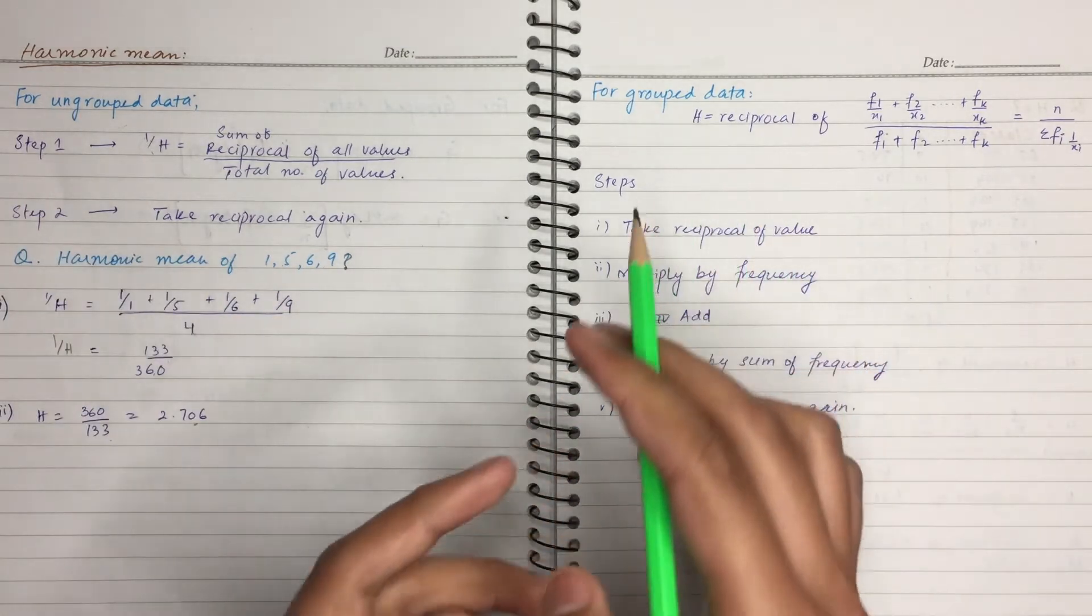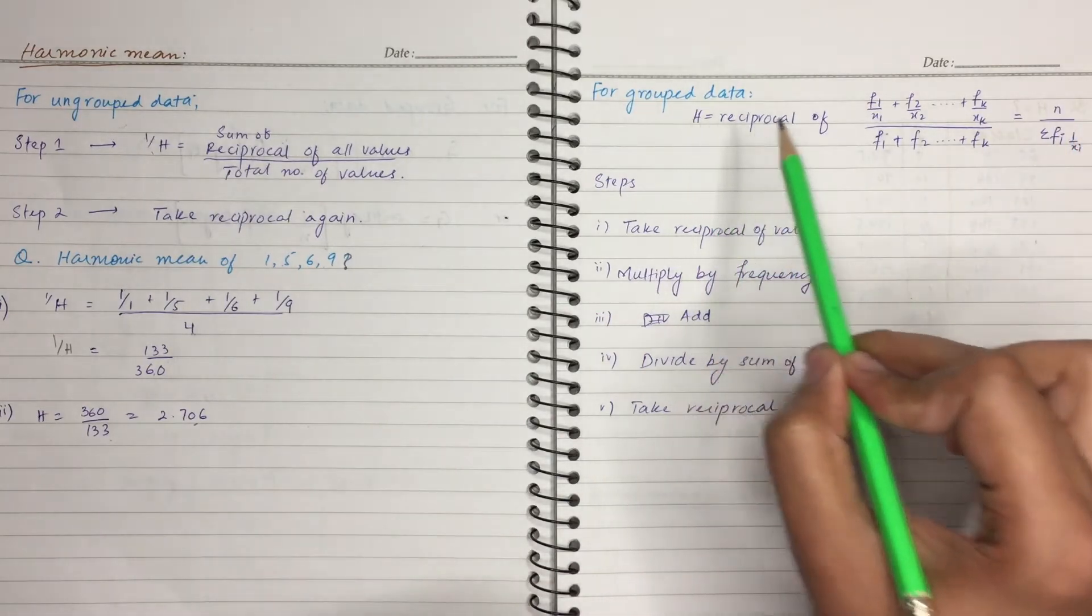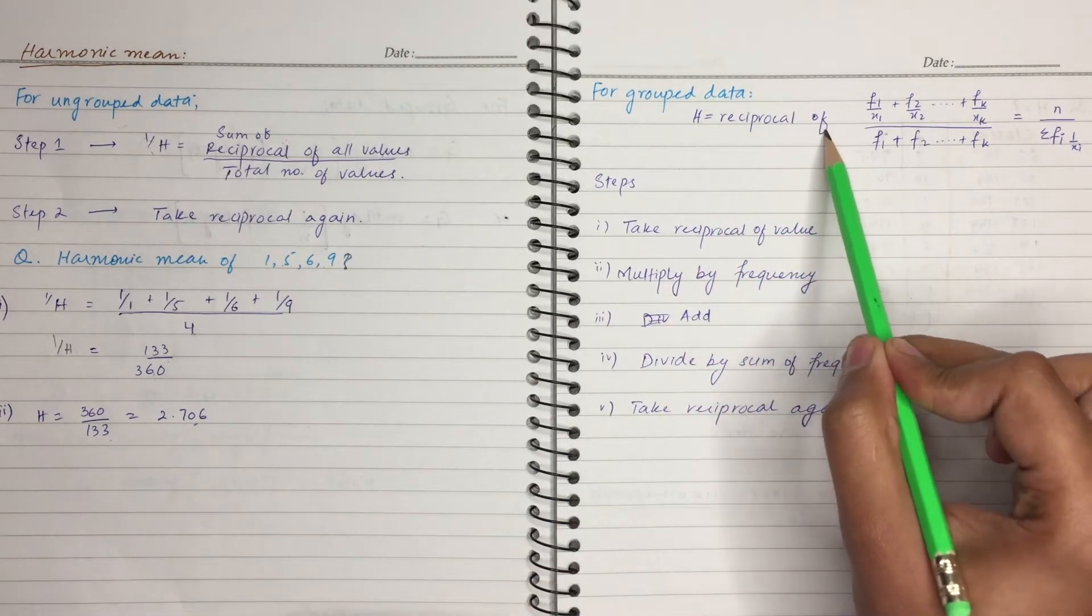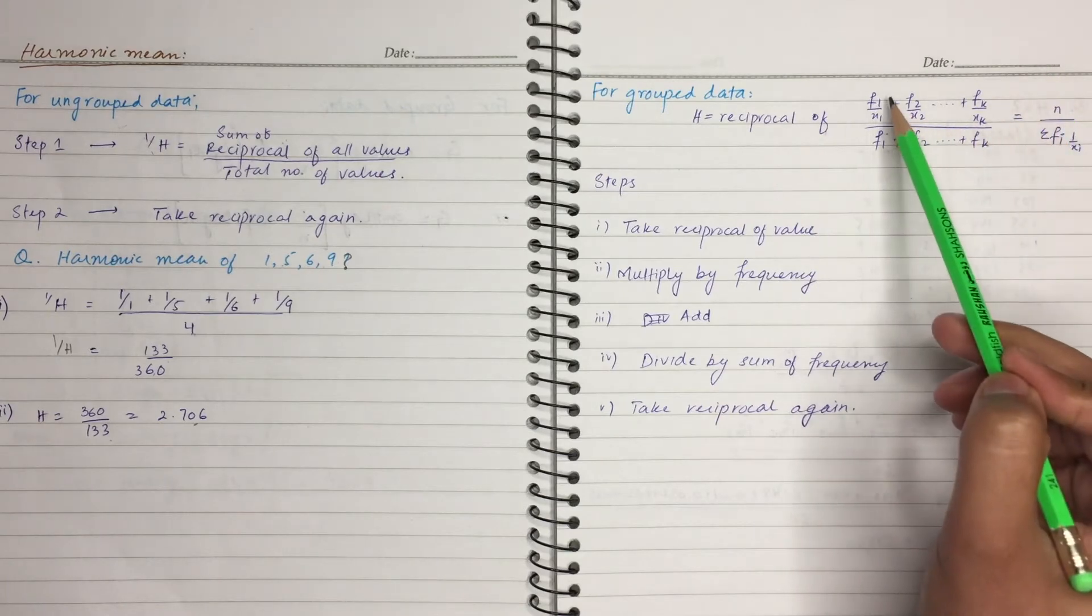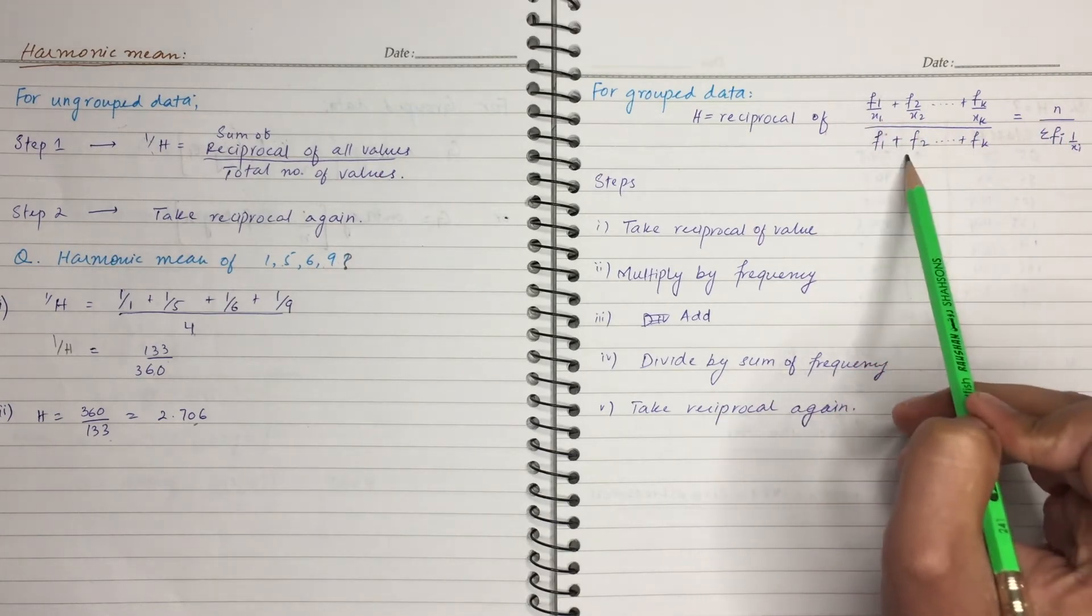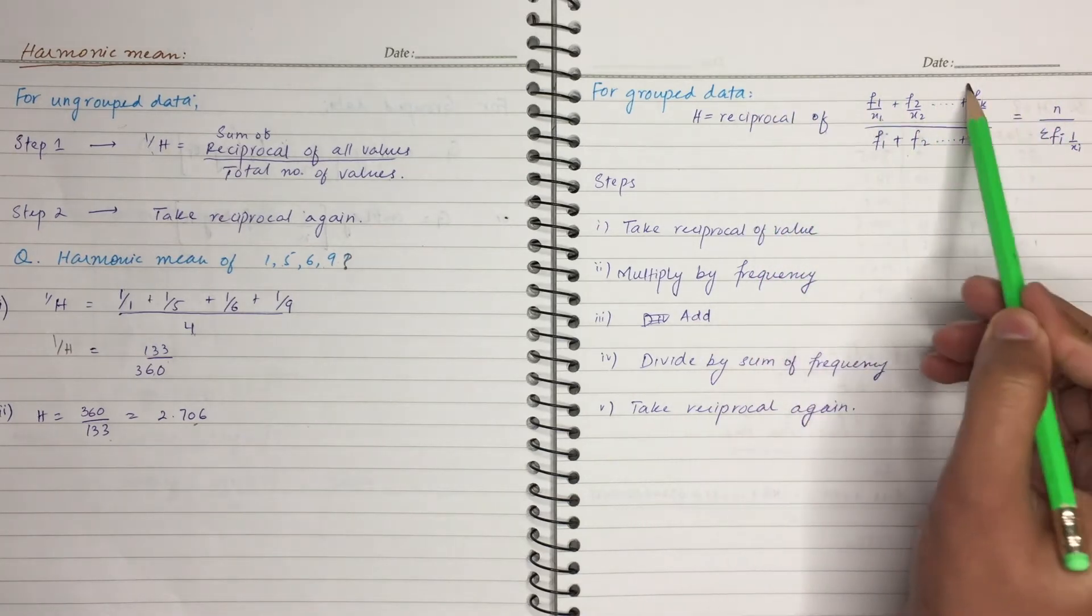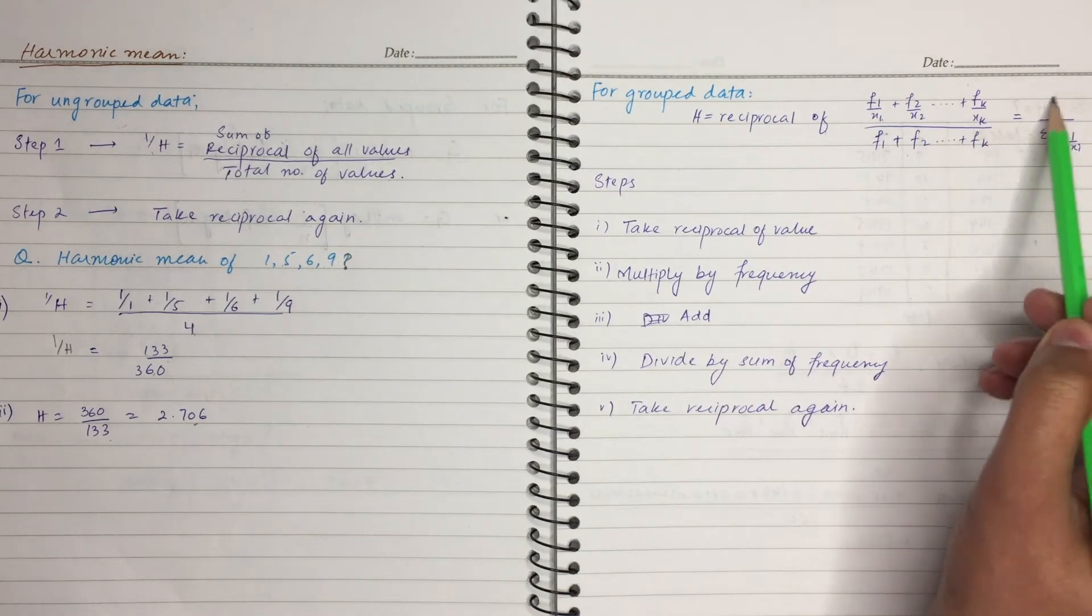If we talk about grouped data, then we will have frequency of all values. So, if we simply coordinate this whole factor, then we will have formula for our formula.